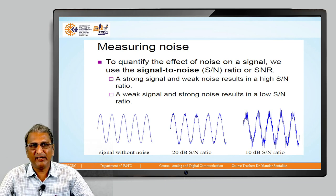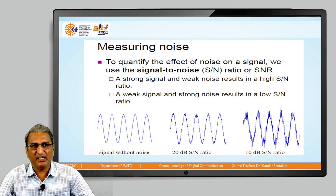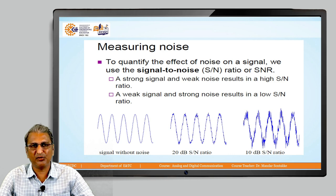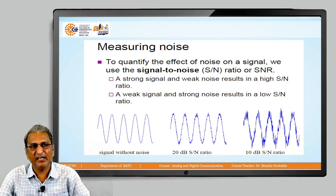To quantify the effect of noise on a signal, we use signal-to-noise ratio. A strong signal and weak noise results in a high signal-to-noise ratio. And weak signal and strong noise results in a low signal-to-noise ratio. As I just mentioned, numerator must be greater than denominator.